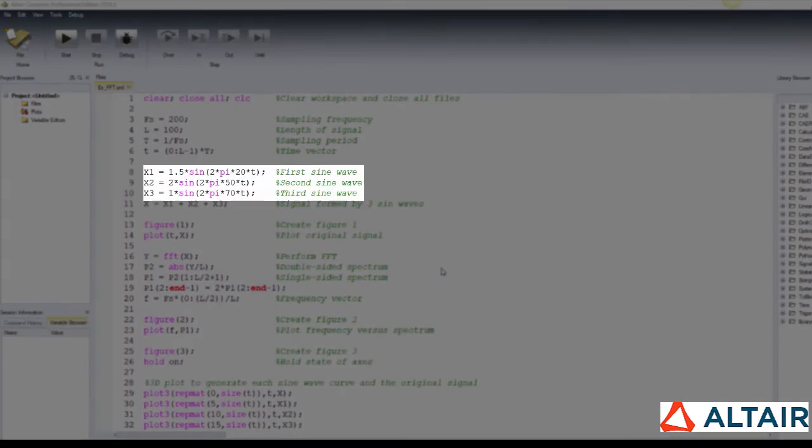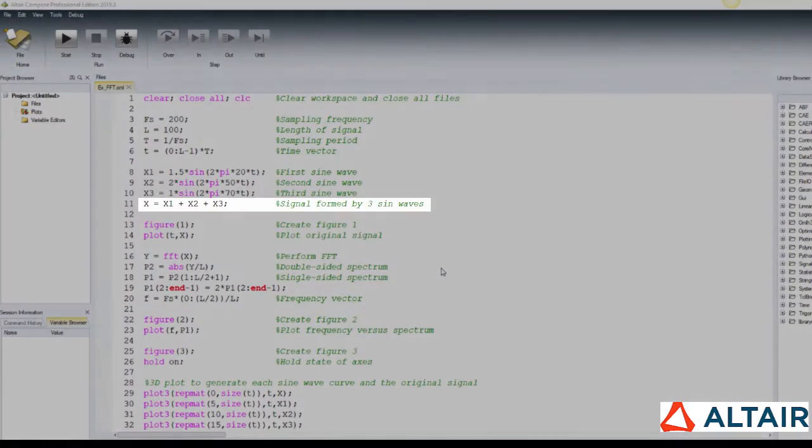Then, create three sine waves that will compose the signal. The first one has an amplitude of 1.5 and frequency of 20 Hz, like we saw before. The second sine wave has 2 and 50 Hz respectively, whereas the third one has 1 and 70 Hz. Then, add these three signals.